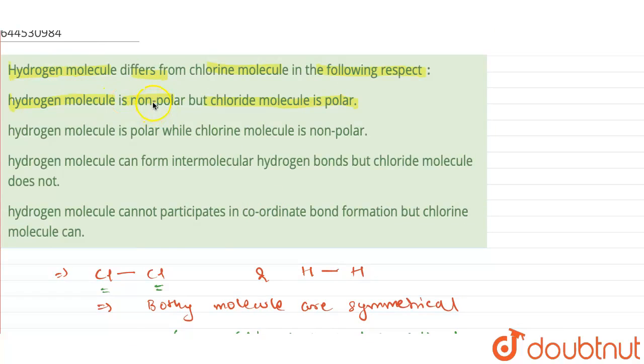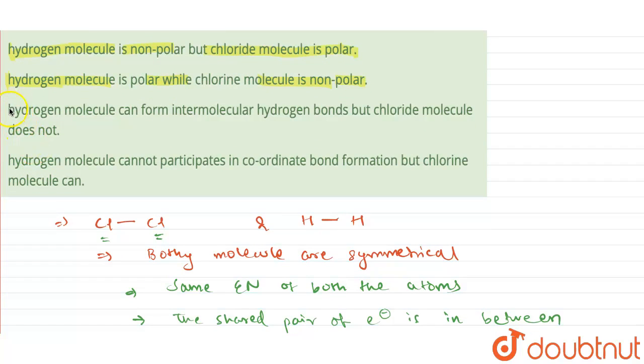Moving forward, we have hydrogen molecule is polar while chlorine molecule is non-polar. This is also not the case because hydrogen and chlorine both are non-polar.